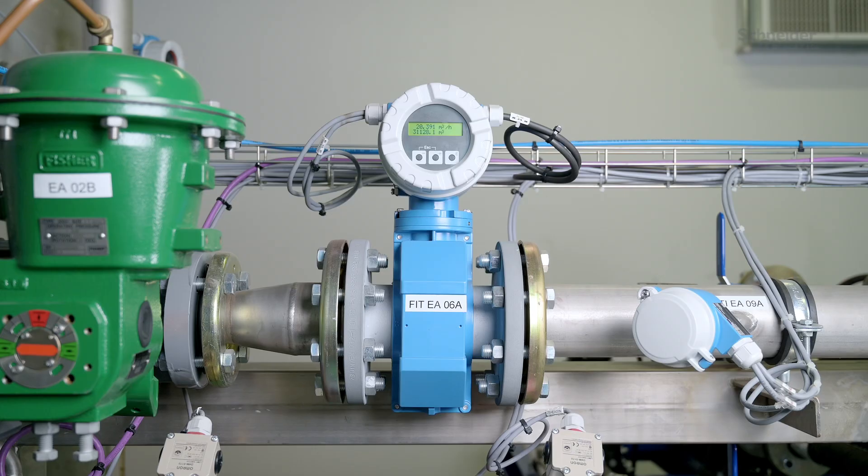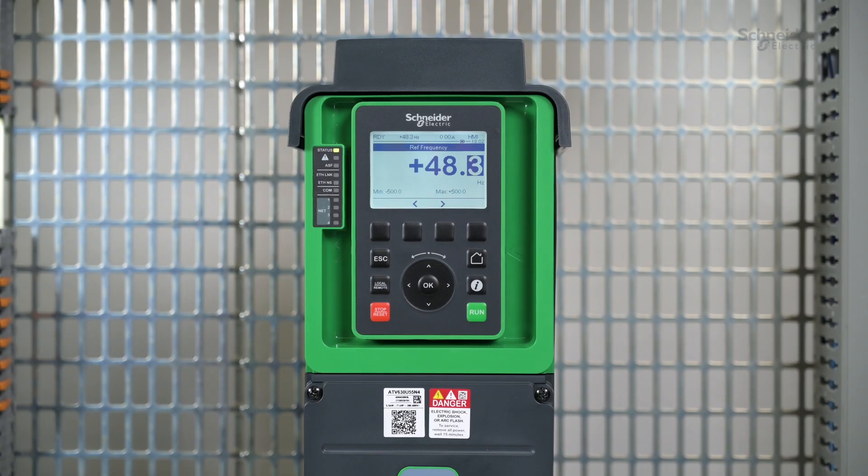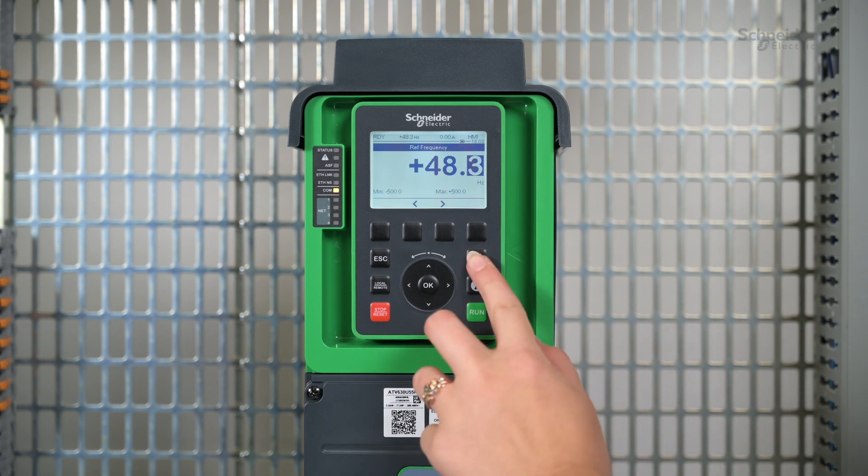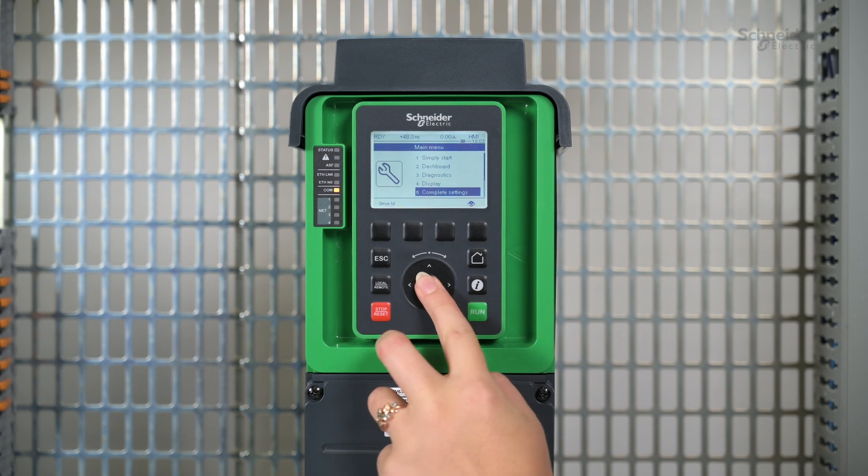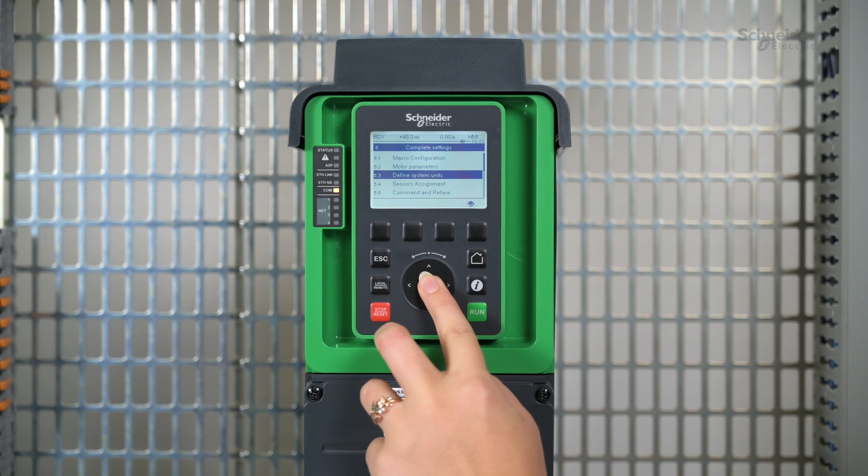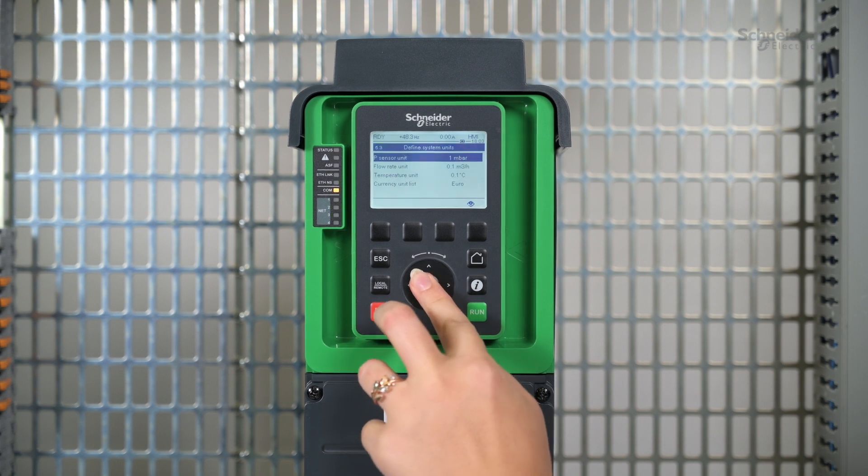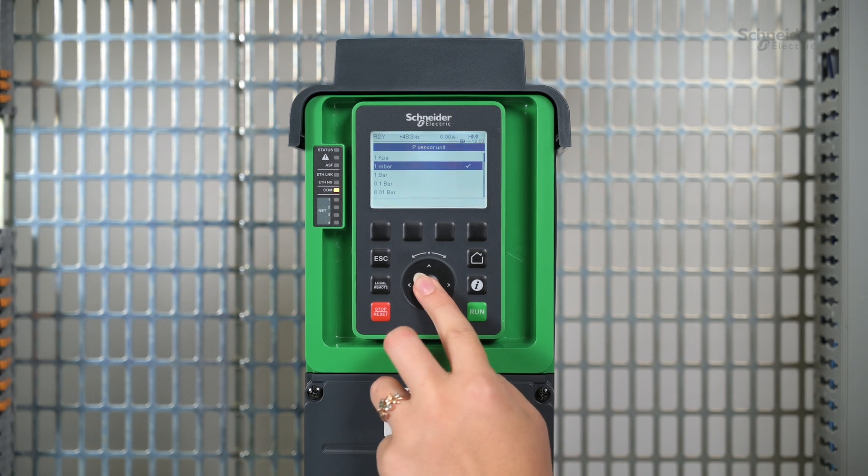In our example, the sensor is connected to AI3 and assigned to the pump flow value. With the graphic display terminal, perform a scaling to be more accurate. Go to complete settings menu, then define system units. In our example, with the pump selected, we change the unit to millibar.